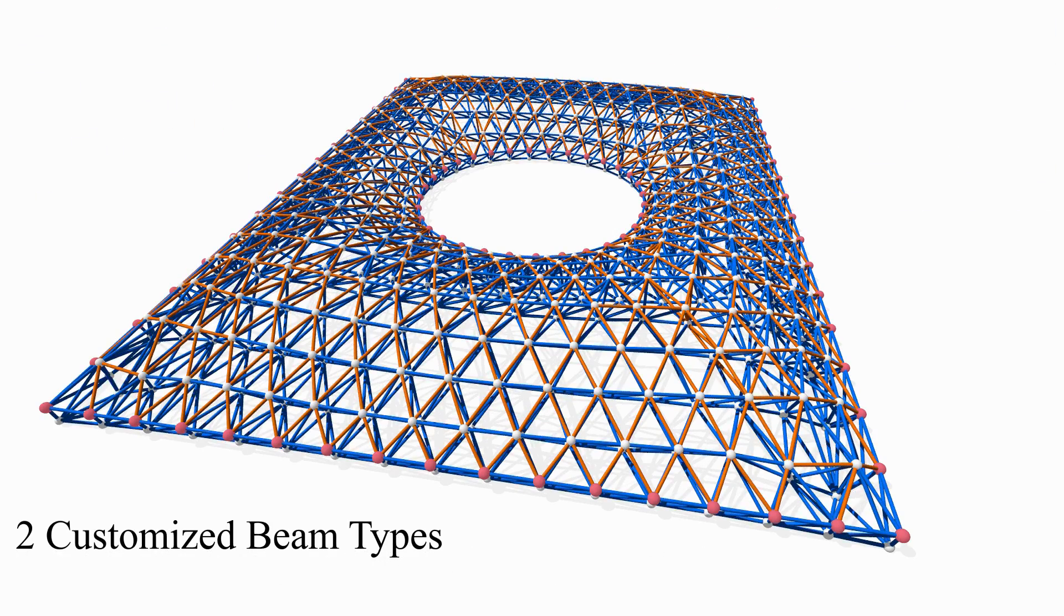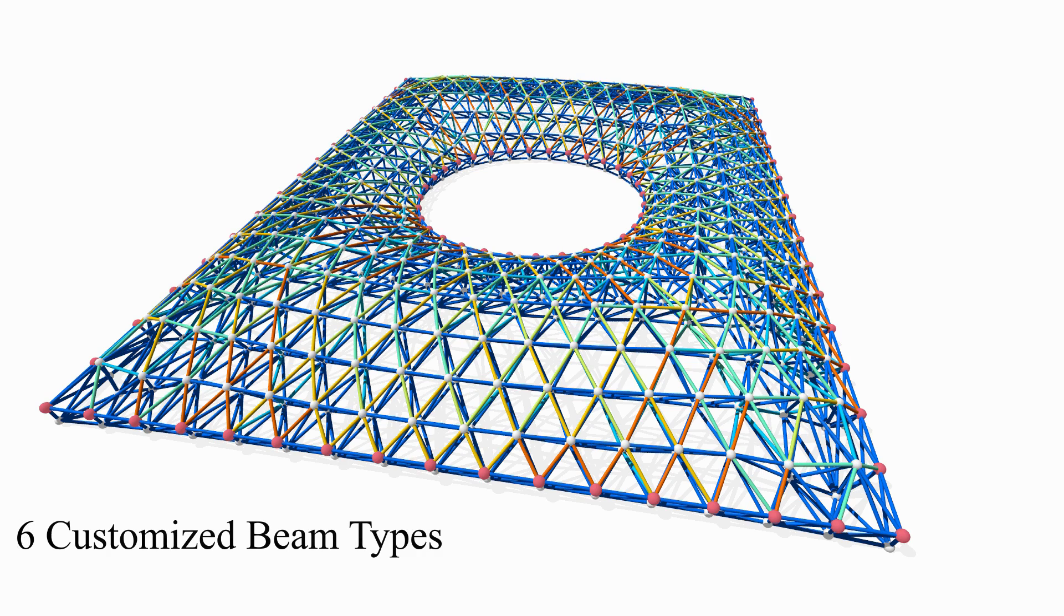Next the system further adjusts the beam cross section types to minimize the total volume of material used, under the condition that the structure should be constructed with beams of a limited number of cross section types.